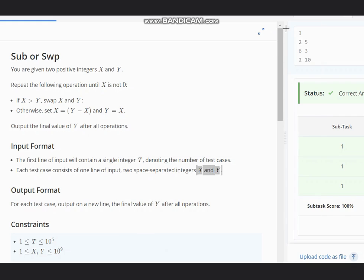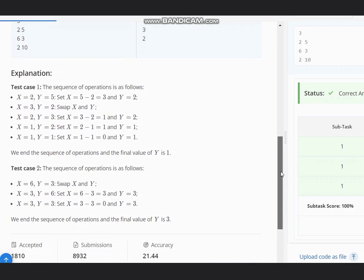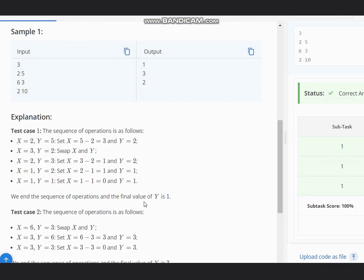We need to keep updating until X is not zero. Now let's see our next test case, that is 6, 3. For 6, 3: we swap, then subtract, then subtract, and finally by setting the value again we get Y equal to 3.